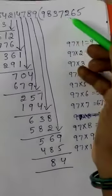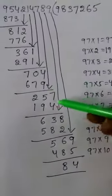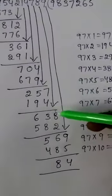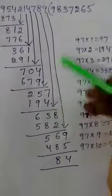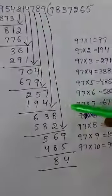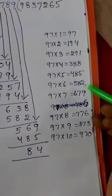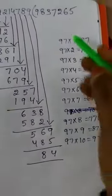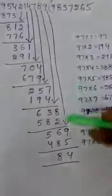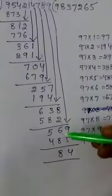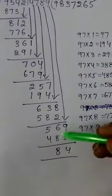257 gives 194, so 2 times — 2 times 194. Minus gives us 63. Next, number 8 is 638. 638 gives 582, so 6 times — 6 times 582. Minus gives us 56.